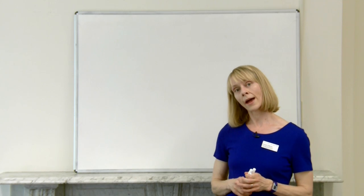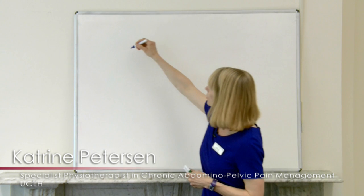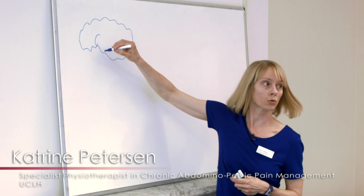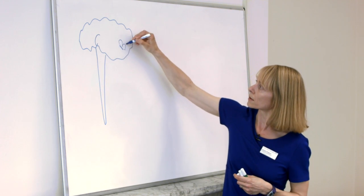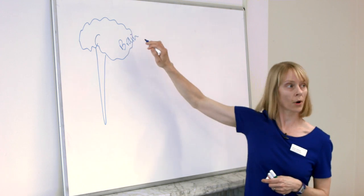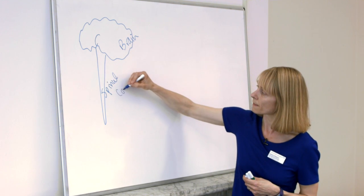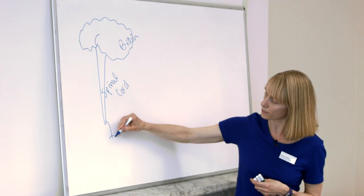You should already be aware of some of the chronic pain mechanisms, so if I draw the central nervous system, which is the brain and the spinal cord, and from the spinal cord you have the peripheral nerves.